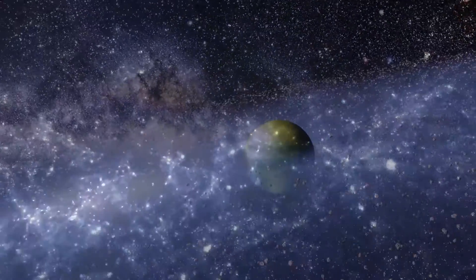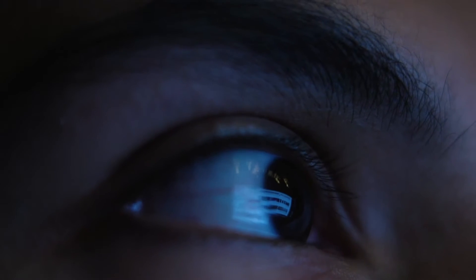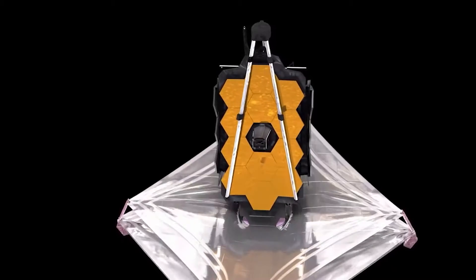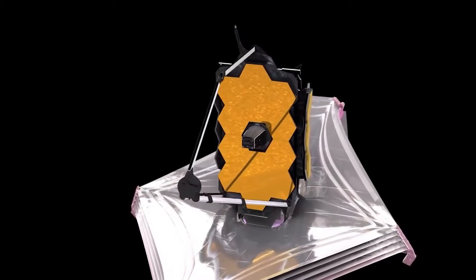Kuiper Belt objects are very cold and faint, yet they glow in infrared light, which is at wavelengths beyond what our human eyes can see. That's why the James Webb Space Telescope is specifically designed to detect infrared light.